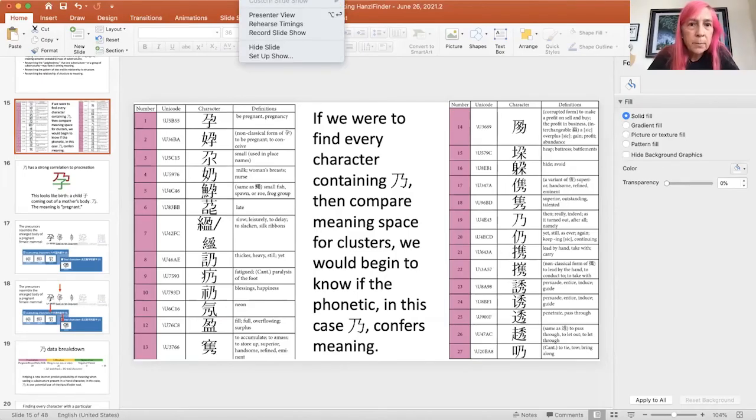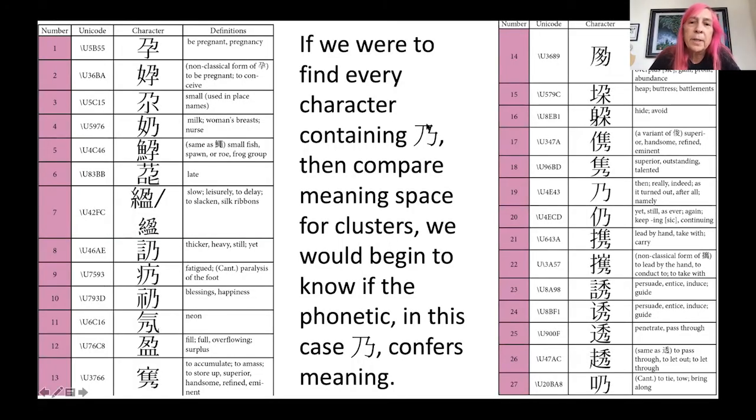We can look at this one page here. Let me see if I can get this up here. Am I still sharing my screen? I don't think so. Share screen. If we look at this, start play from current slide, we can see that we have looked at this, what I call it B doppelganger. And if we look at the alphabet, the alphabet used to go ABVG. So B and V have a very close association. I believe they're female mammals, breasts and vaginas. So if we look at here, we see be pregnant to be pregnant, small, well, women are smaller than men, milk, women's breast nurse, small fish, spawn roe late. These are concerns when you're pregnant, slow, thicker fatigue, paralysis of the foot, blessings, happiness. What character has a relationship with fatigue, paralysis of the foot and blessings, happiness, but pregnancy.